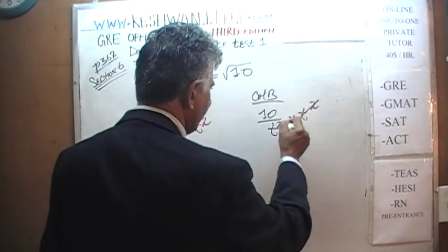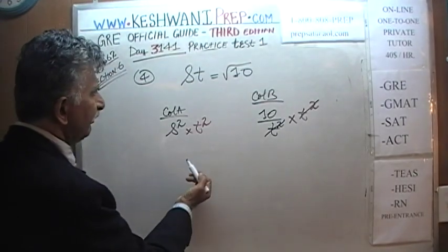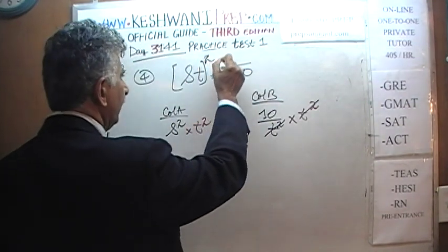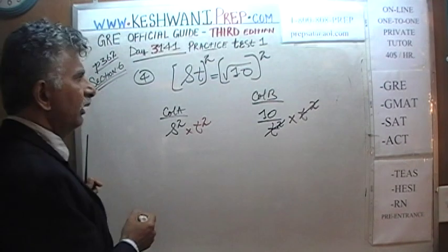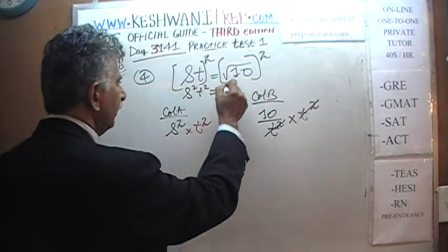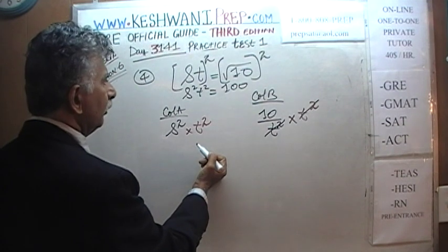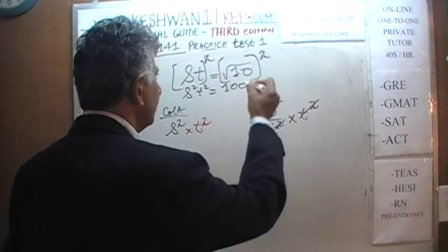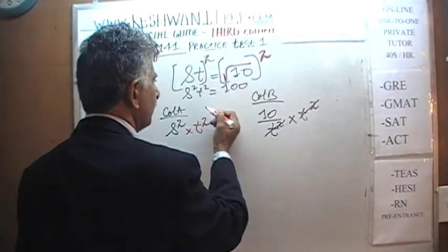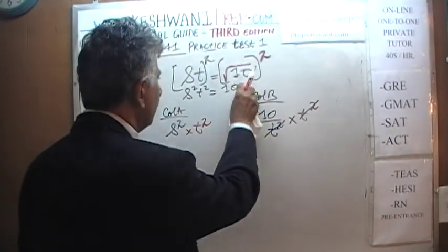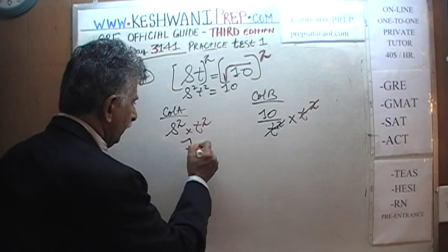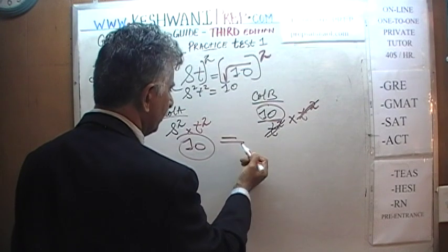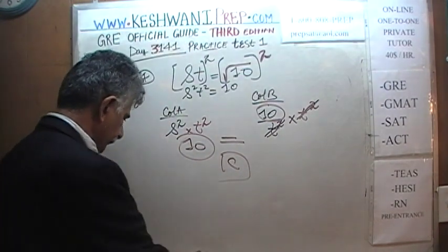After multiplying both columns by T squared, column A becomes S squared times T squared, and column B becomes 10. We take the given equation S times T equals the square root of 10 and square both sides: S squared times T squared equals 10. So both columns equal 10 — they are equal. The answer is C.